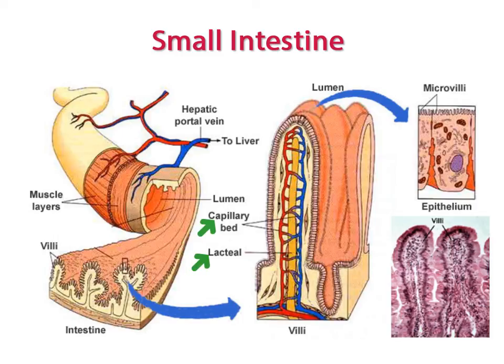These blood vessels and the lacteal are used in the transportation of nutrients absorbed from the surface cells of the small intestine. The muscular walls of the small intestine undergo peristalsis to help move food along through the digestive tract. The inner surface of the small intestine also contains glands that secrete digestive enzymes into the intestinal tract to assist with the chemical breakdown of food.